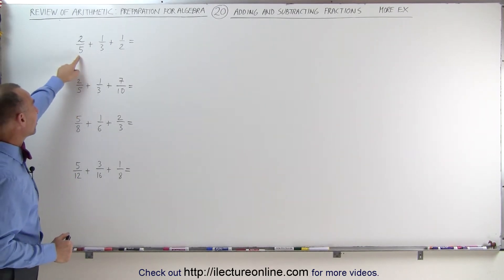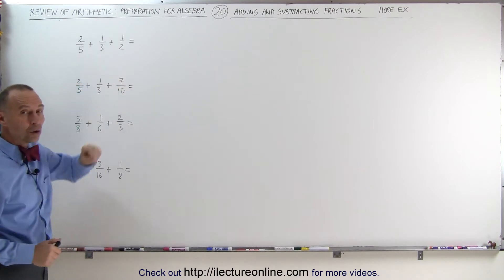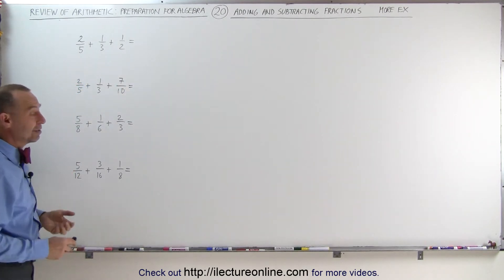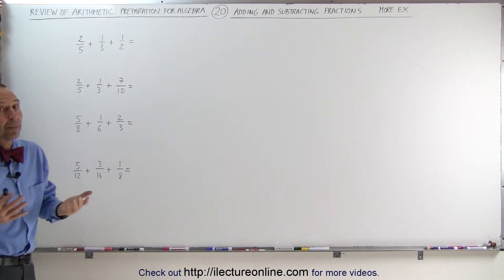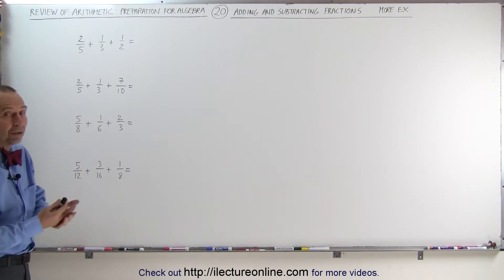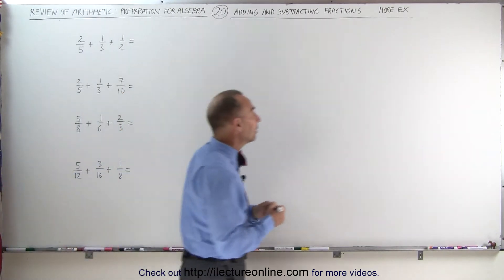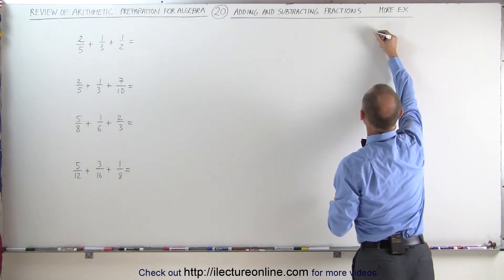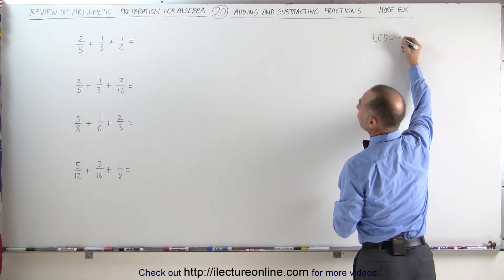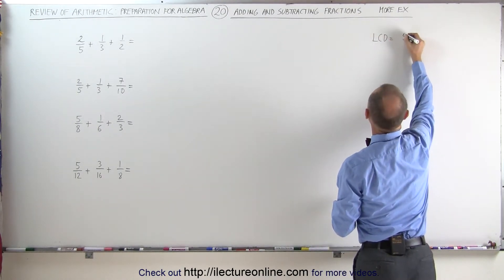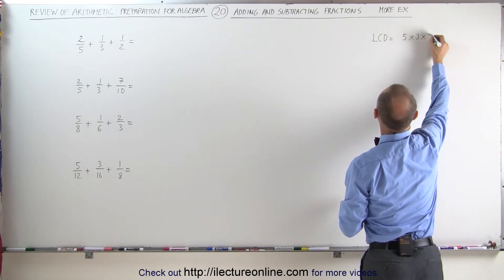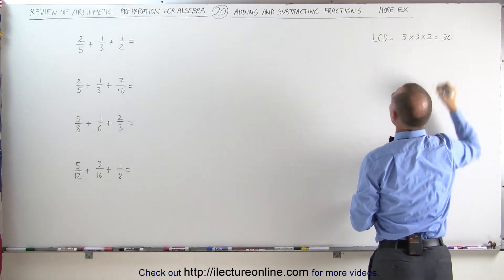In our first example, look at the three denominators. All three of them are a prime number. If all three of them are a prime number, you simply have to multiply them all together to find the lowest common denominator. So the LCD is simply equal to 5 times 3 times 2, which is equal to 30.